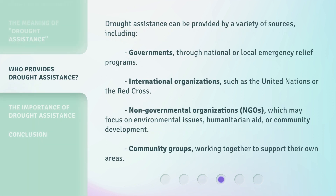Drought assistance can be provided by a variety of sources, including: governments, through national or local emergency relief programs; international organizations, such as the United Nations or the Red Cross; non-governmental organizations, or NGOs, which may focus on environmental issues, humanitarian aid, or community development; and community groups, working together to support their own areas.